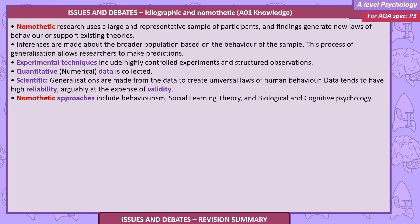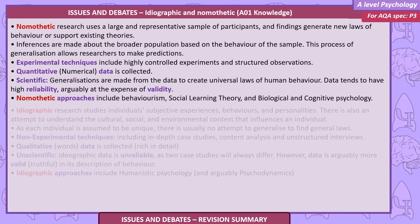Quantitative, numerical data is collected. Generalisations are made from the data to create universal laws of human behaviour. Data tends to have high reliability, arguably at the expense of validity. Nomothetic approaches include behaviourism, social learning theory, and biological and cognitive psychology.